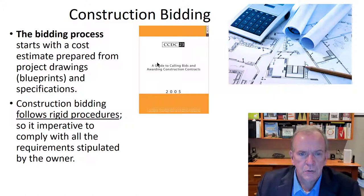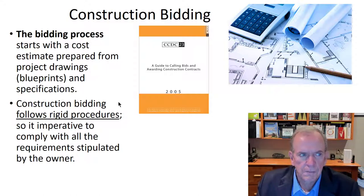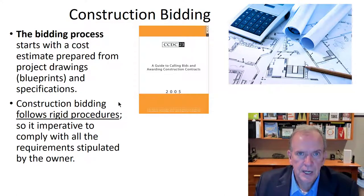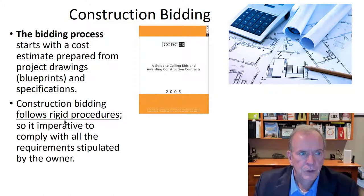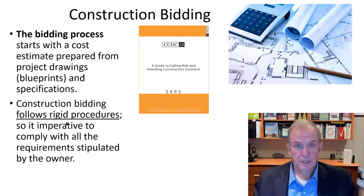The CCDC — the Canadian Construction Documents Committee — has a bunch of standardized documents including contracts. There's a guide to calling bids and awarding construction contracts that gives the processes, best practices, and requirements for successfully bidding and awarding projects to avoid problems. There can be legal actions if a contractor is unfairly awarded a contract, and you have to understand that putting together bids on big projects are expensive propositions.